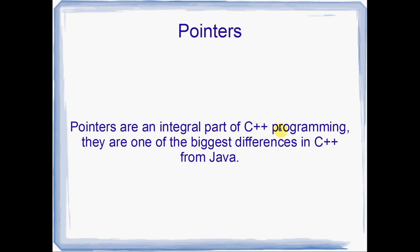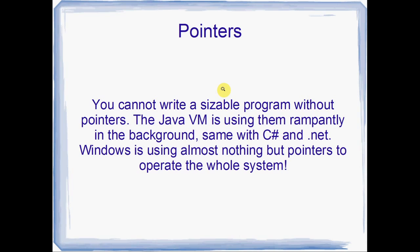Pointers are an integral part of C++ and they're one of the biggest differences between C++ and Java. You can't really write a sizeable program without pointers, and in the background the Java Virtual Machine is actually using a lot of pointers. The same with C Sharp and .NET — any language you use pretty much is using pointers all over the place in the background, whether they let you use pointers in the code or not. Even down to the fact that Windows itself, the operating system, is doing almost nothing but pointers in the background.